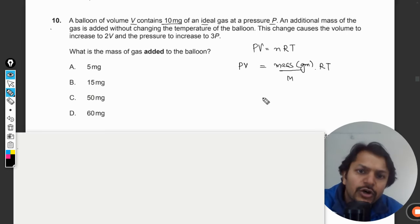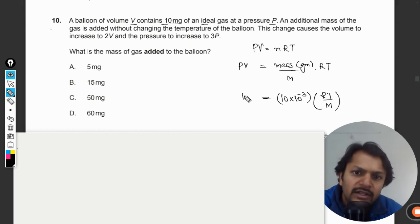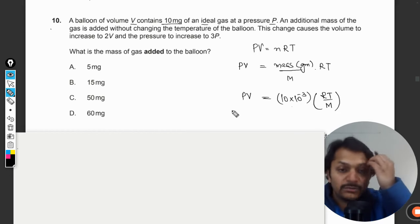So let us say earlier the mass was m, which was 10 milligrams by the way, 10 milligrams into RT divided by M, and this is P into V. So this is case number one.